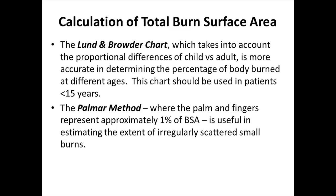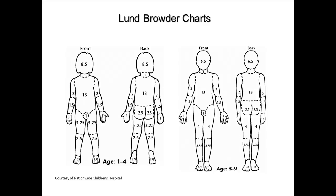Along with AMPLIT, you will also need to calculate the extent of the child's burn. The most accurate tool we use for this determination is the Lund Broder chart, which takes into account the proportional differences of a child versus an adult. It's more accurate in determining the percentage of the body burned at different ages, and this chart should be used in patients under 15 years of age. The Palmer method is where the palm and fingers represent 1% of the total body surface area burn, and is useful in estimating the extent of irregularly scattered small burns. The Lund Broder chart is broken into three age groups: 1 to 4, 5 to 9, and 10 to 14.